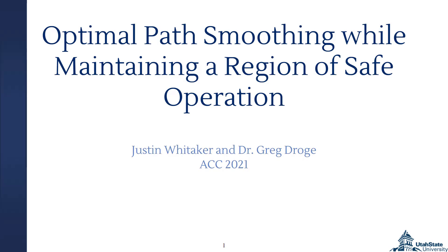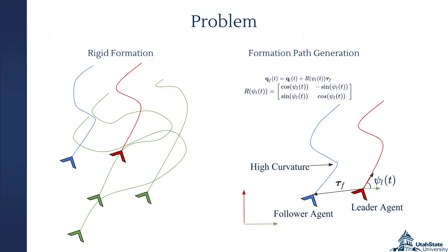Hi, I'm Justin Whitaker, presenting work done with Dr. Greg Droge on optimally smoothing vehicle paths while maintaining safe operating regions. When a rigid formation follows a leader trajectory, follower trajectories are induced accordingly. These paths can have regions of high curvature and other undesirable characteristics. If strict formation rigidness isn't necessary, smoothing the follower trajectories can remove these issues. Several difficulties arise: maintaining collision-free trajectories requires considering all agent trajectories simultaneously, invoking the curse of dimensionality; non-linear and non-holonomic dynamics must be respected; and state constraints can be difficult to handle.